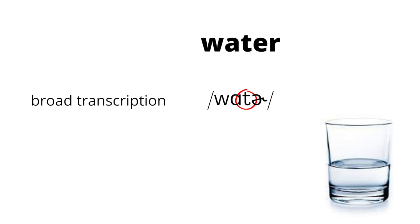But the point is that for broad transcription, we just categorize these as T-like sounds. So when we transcribe them broadly, we can just use the underlying phoneme — meaning the category that's in our head — knowing that all these different sounding allophones are part of this same group.